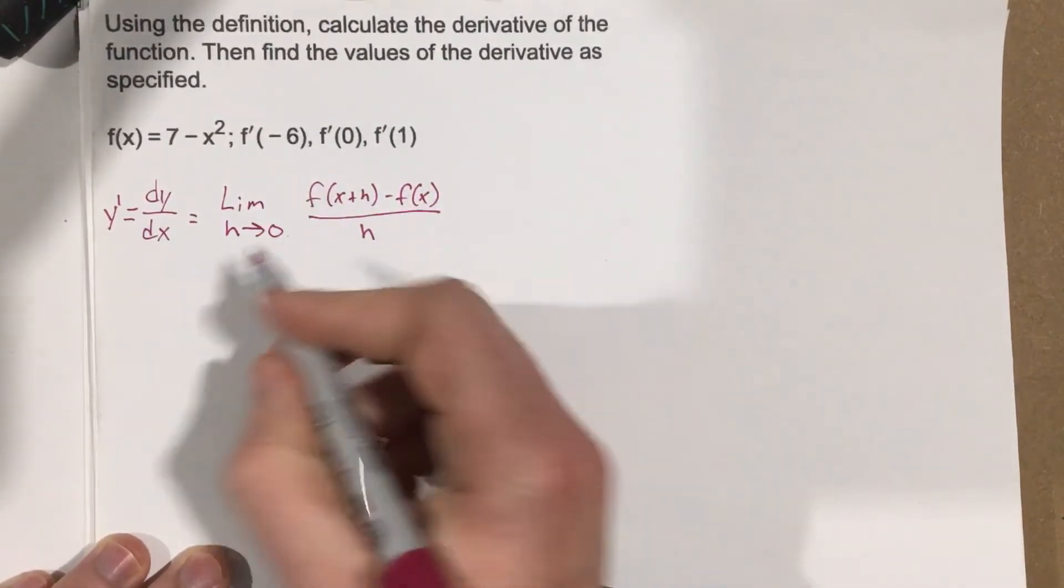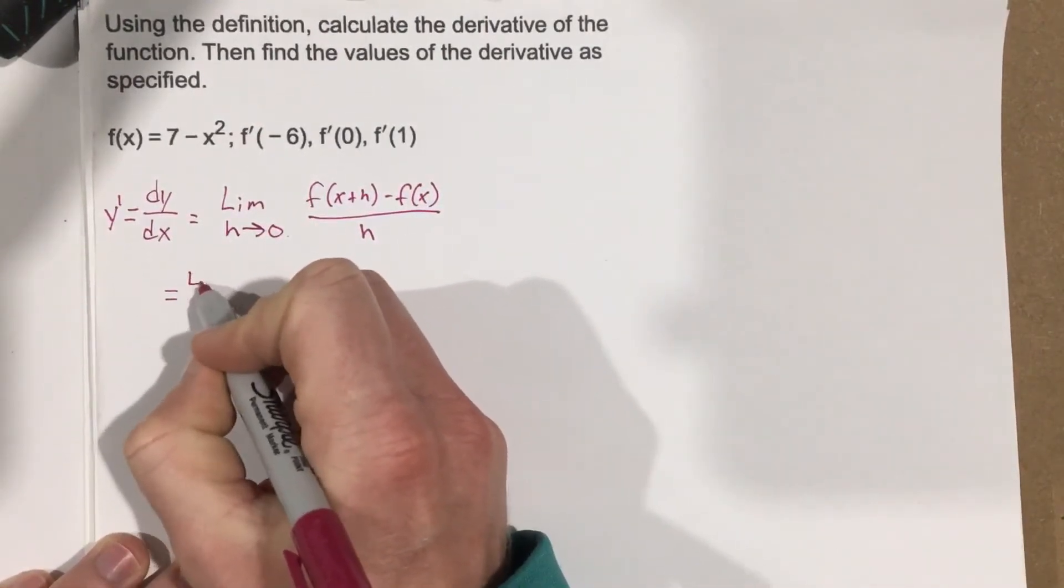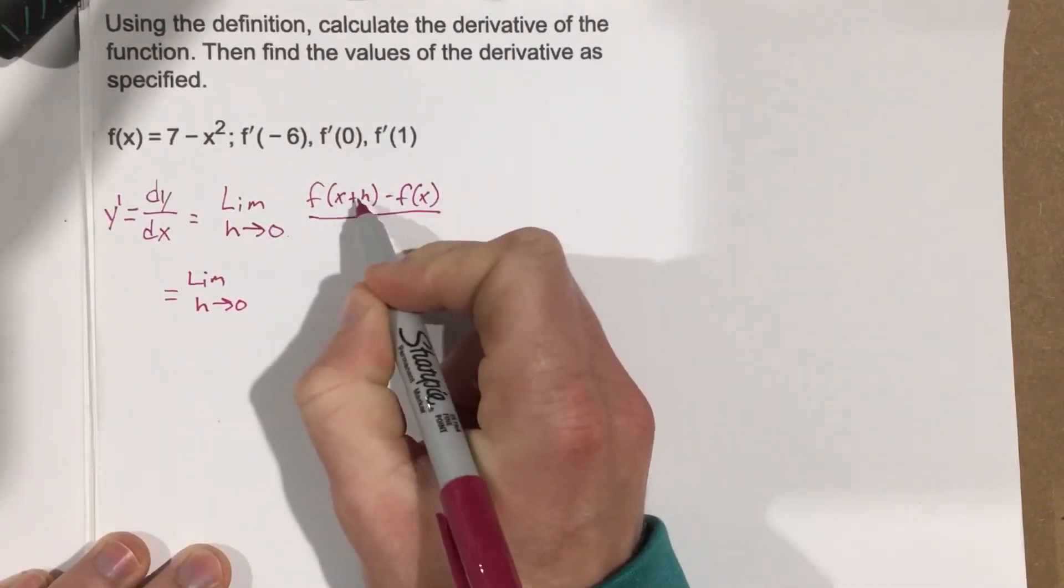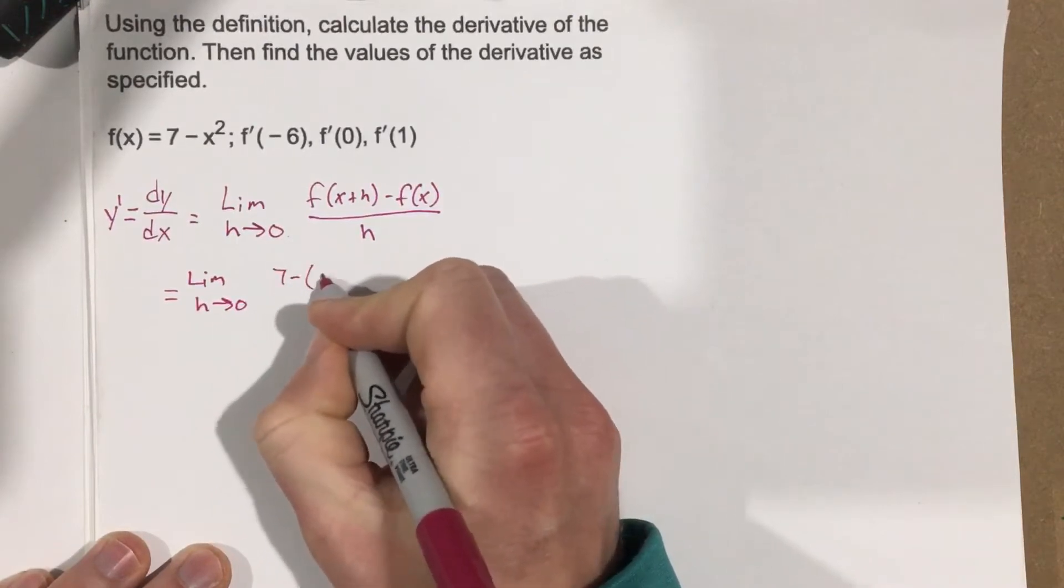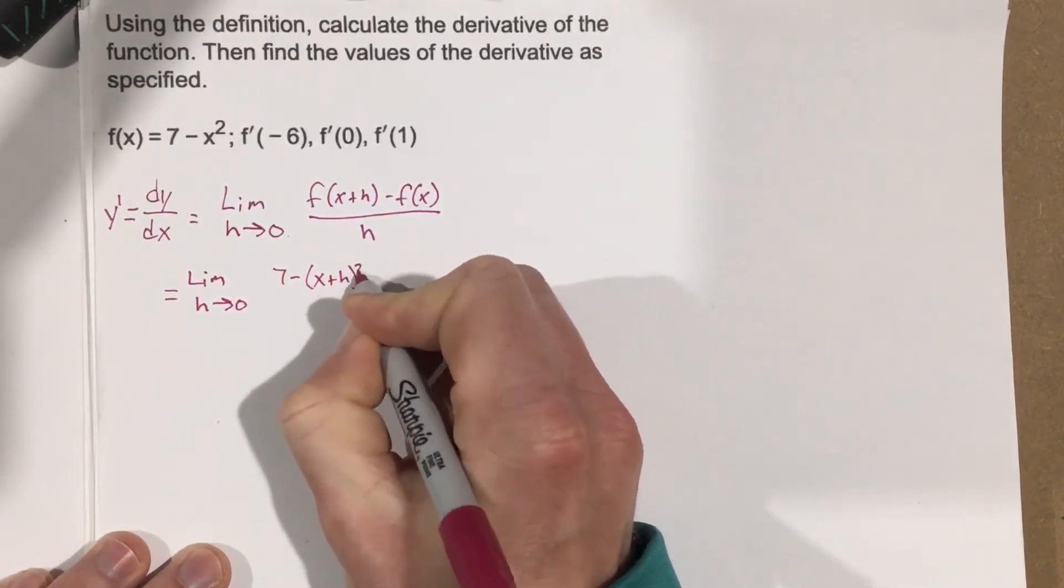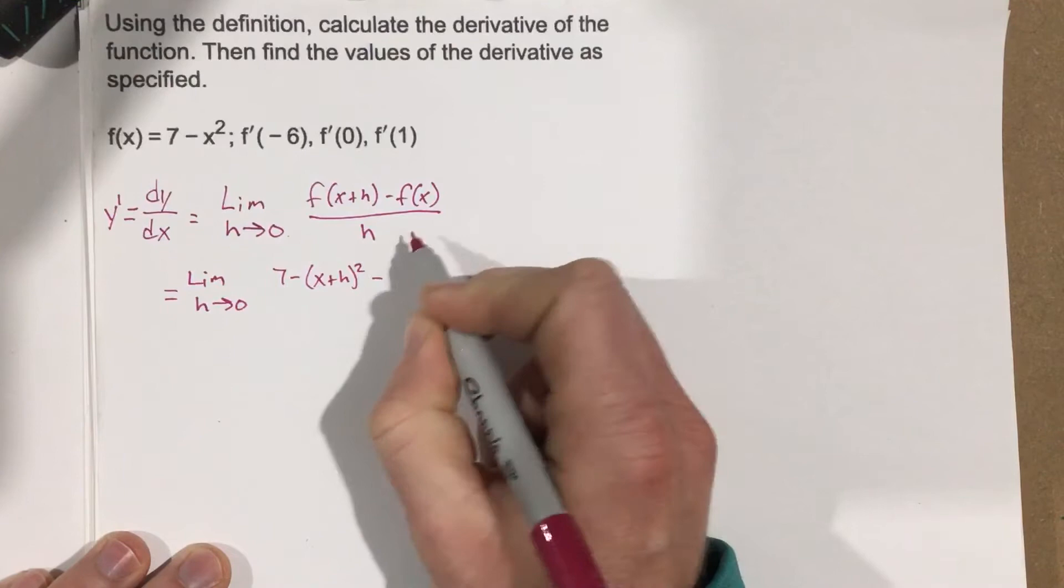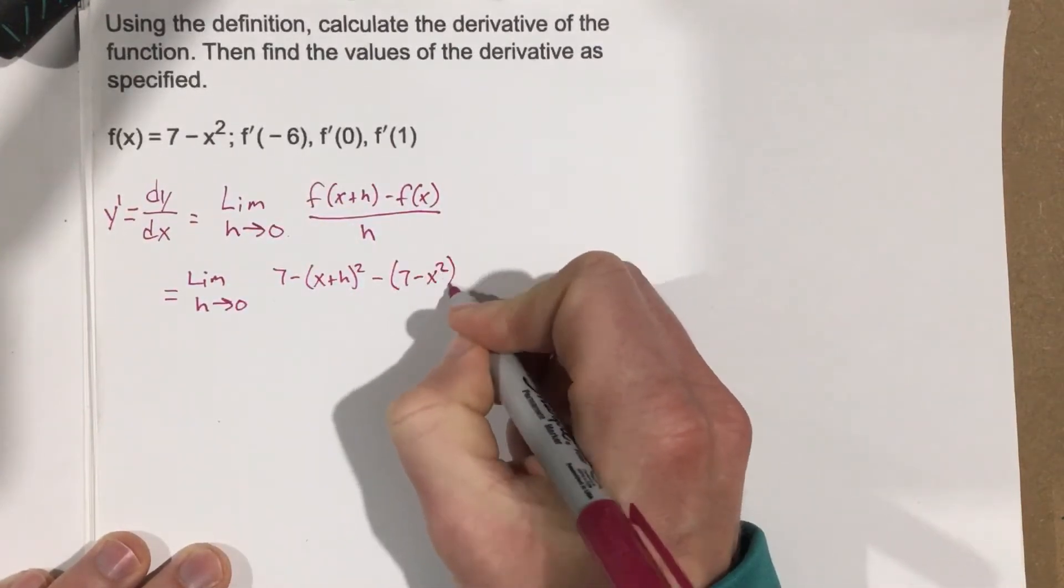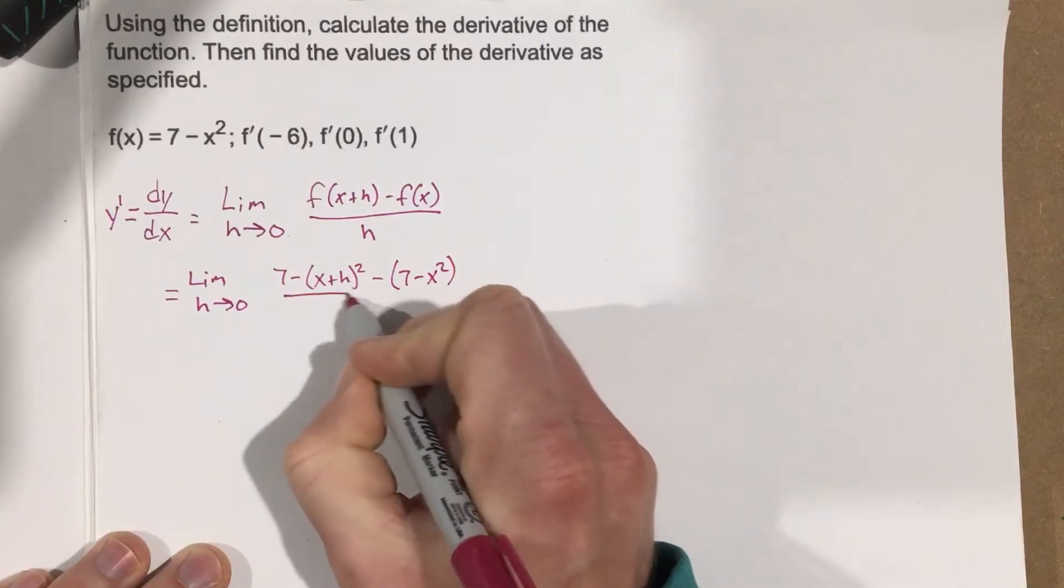Let's go ahead and plug it in. We're going to say that equals the limit as h approaches 0. Plug in x plus h. So, we have 7 minus x plus h squared minus the original function, which is 7 minus x squared, all over h.